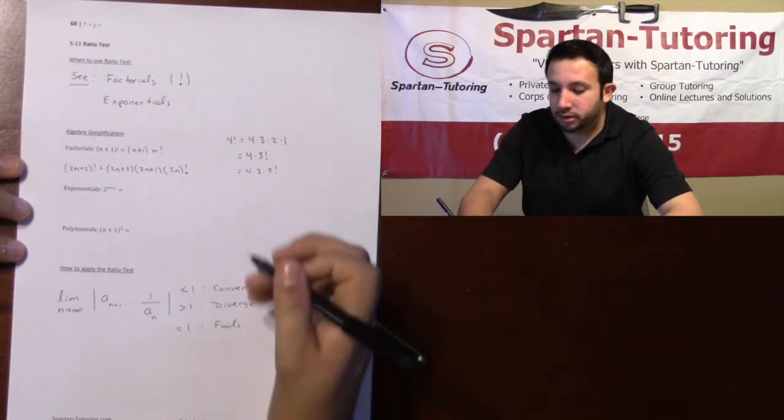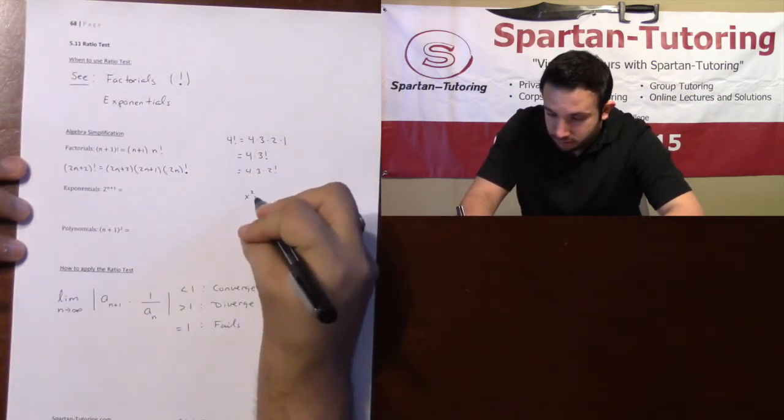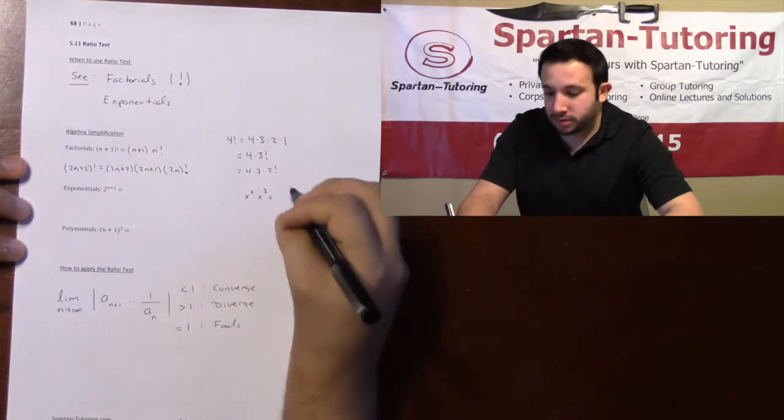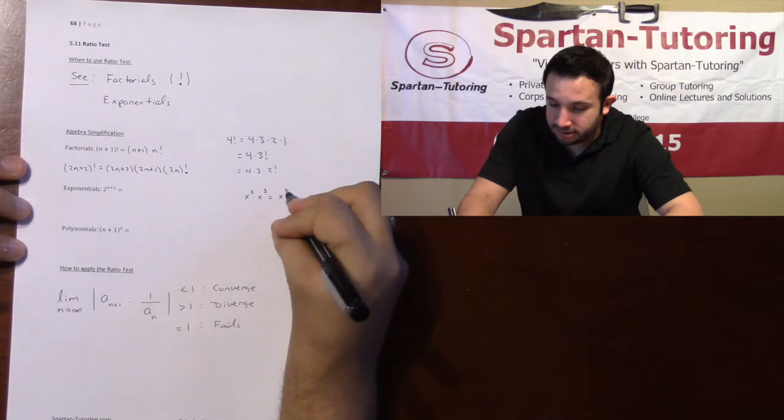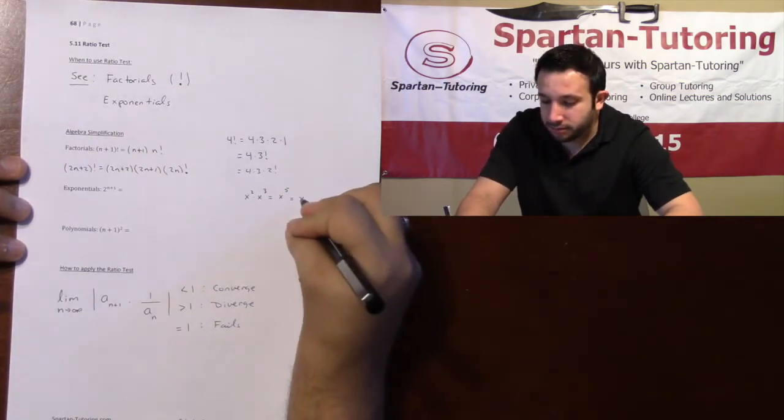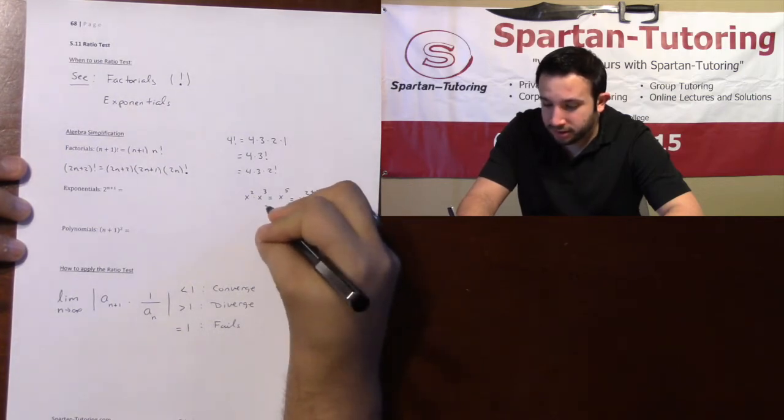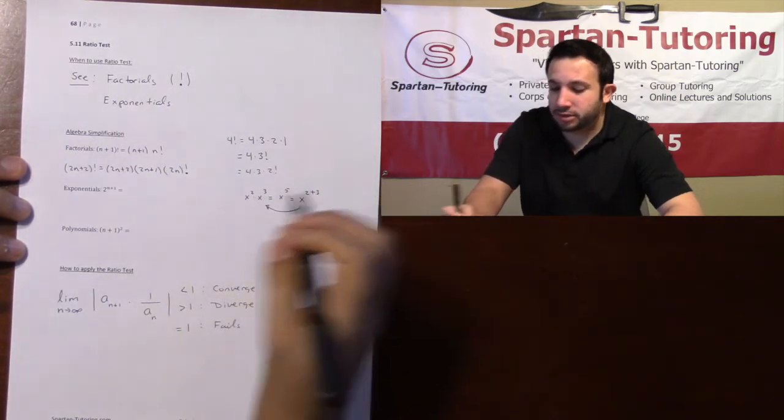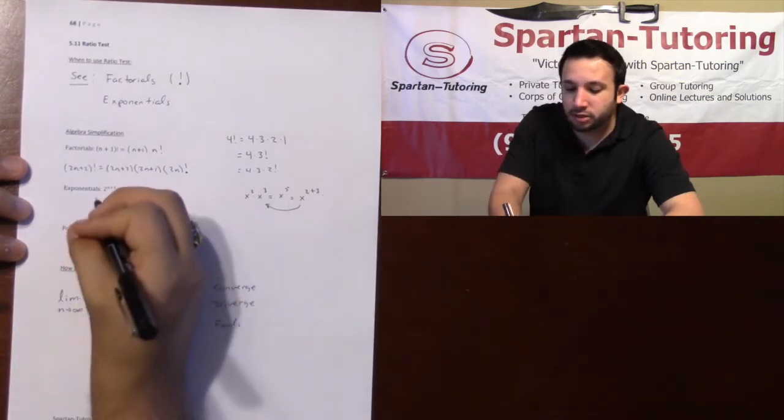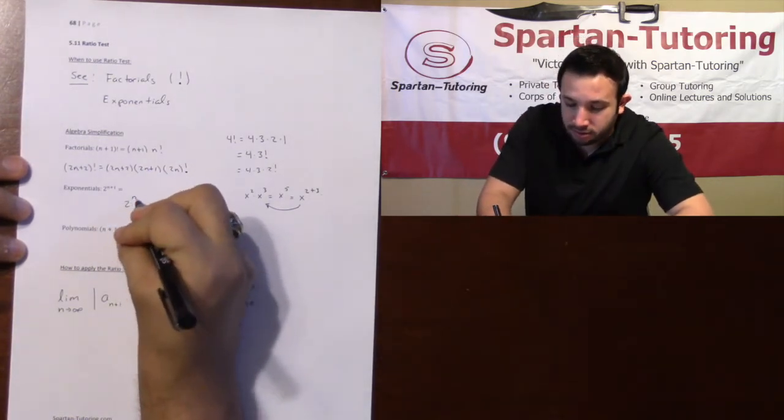So I have 2 to the n plus 1. Before I tell you how to do that, I have a question for you: what is x squared times x cubed equal to? Well, x squared times x cubed is x to the fifth. And how'd you do that? You added the exponents. The point that I want to make is if you add the exponents on top, I can split this into x squared times x cubed.